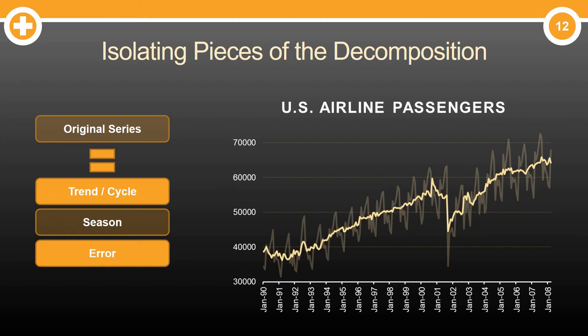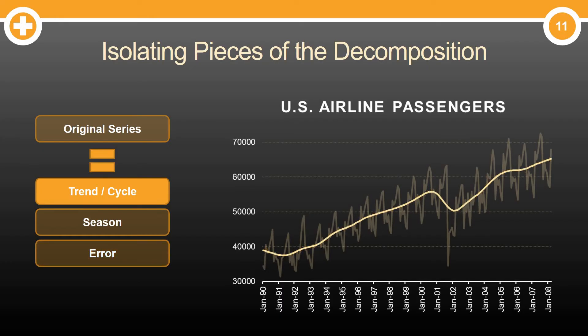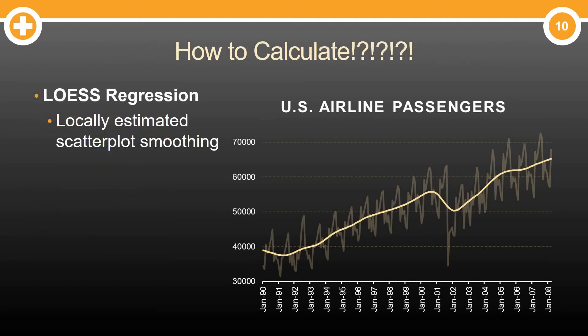We can remove this seasonal component from our original series and now we have what we call a seasonally adjusted time series. When you have seasonally adjusted data, all we've done is remove that seasonal piece. If we wanted to, we could take out the error term as well and really just understand the underlying trend. In classical decomposition, we basically take moving averages for trend as well as general averages for season. More modern techniques use what we call LOESS regression, or locally estimated scatterplot smoothing — some people call this localized regression — and that's really how we get this trend line.